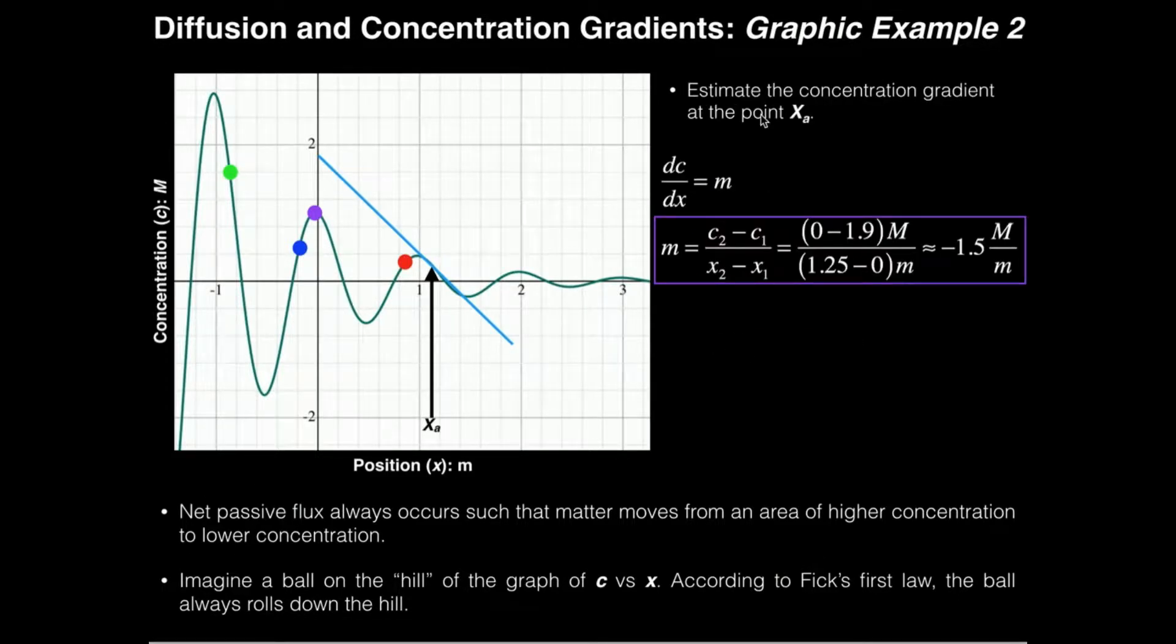Now what we're going to do is we're actually going to estimate the concentration gradient at a particular point on the graph. So right here I have a point, I'm going to call this x sub a, this is my point right here. What I want to do is estimate the concentration gradient at that point.